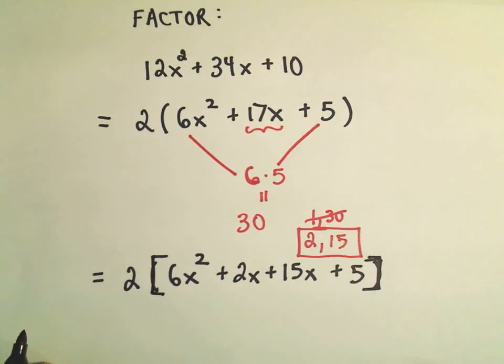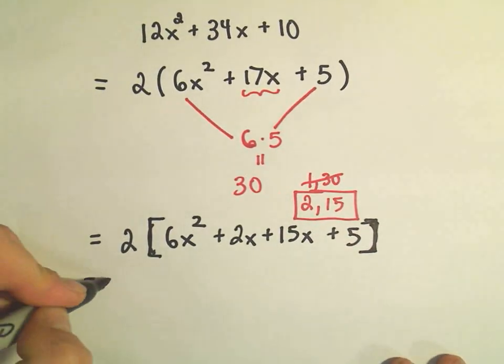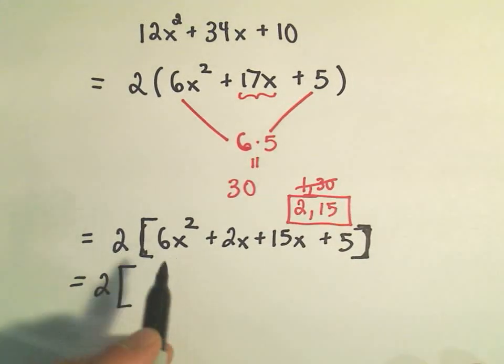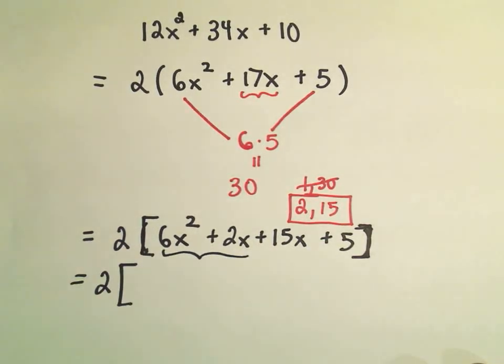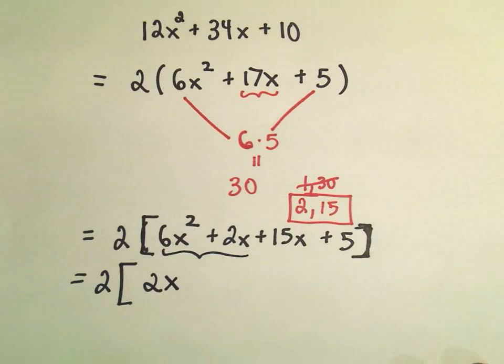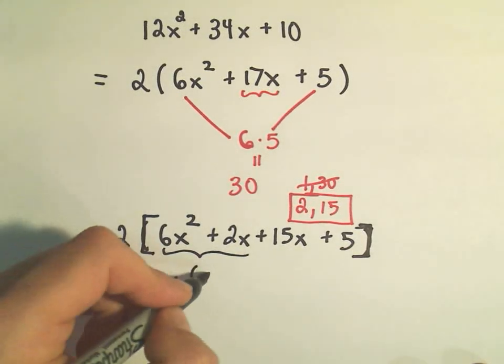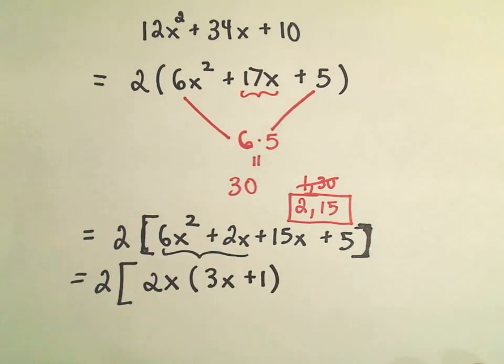And now this is where we now do our factoring by grouping step. Okay, so there's my 2 still just hanging out front. And remember, when we do factoring by grouping, we look at our first two terms. And I think, what's in common that I could factor out? What's the greatest common factor? Well, I believe we could factor out another 2 and also an x. And then inside the parentheses, 2x times 3x would give us the 6x squared. And I think we would simply just need a positive 1 to get our 2x back.